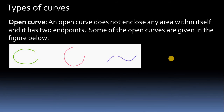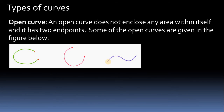Types of curve: first is open curve. An open curve doesn't enclose any area within itself and it has two end points. In the examples of open curves, there is a starting point and an ending point — the starting and ending points don't meet each other. That is what the open curve is.